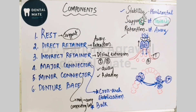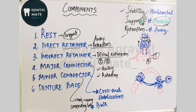So these are the various components of the removable partial denture, along with the three important terminologies: retention, stability, and support. Please don't forget to like, comment, share, and subscribe to the channel. Stay tuned and keep visiting.